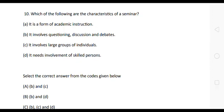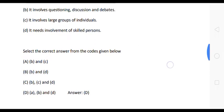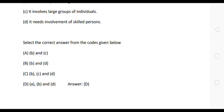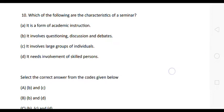The next question is: which of the following are the characteristics of a seminar? Statement A: it is a form of academic instruction. Statement B: it involves questioning, discussion, and debates. Statement C: it involves large groups of individuals. Statement D: it needs involvement of skilled persons. The correct answer is Option D — statements A, B, and D are the characteristics of a seminar.